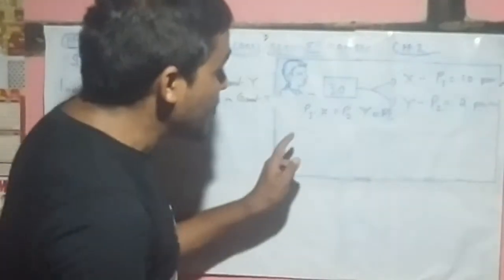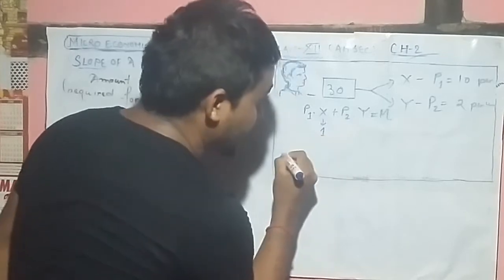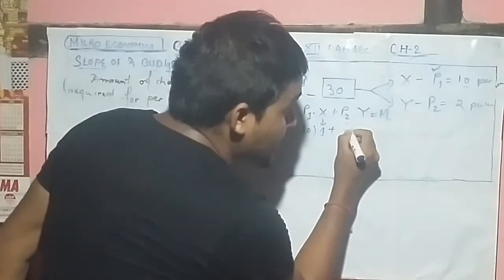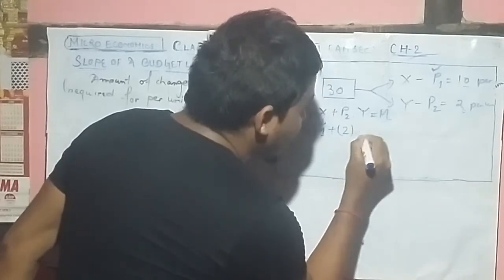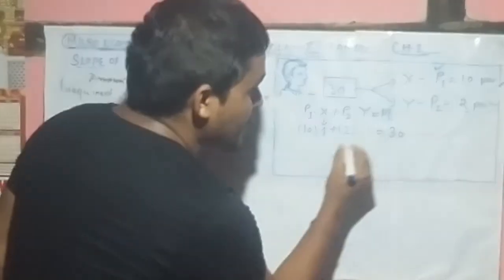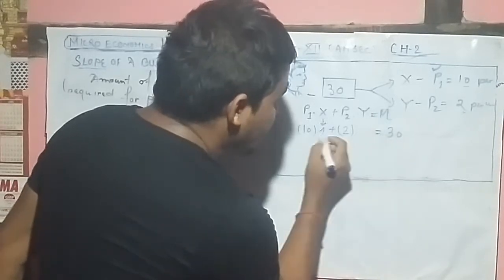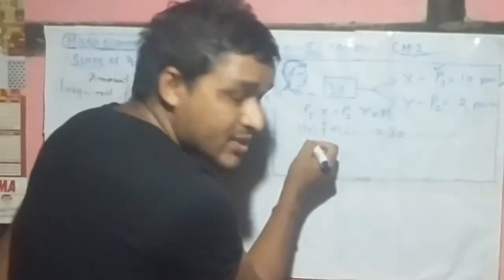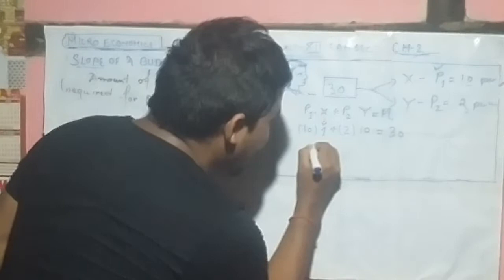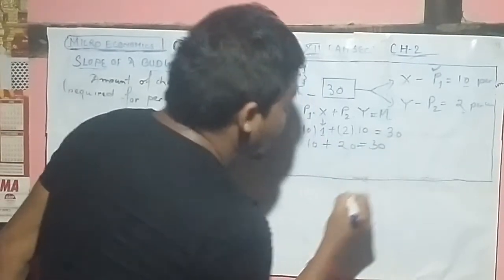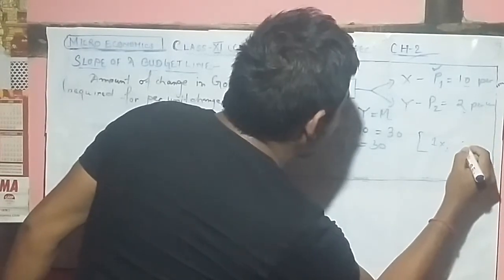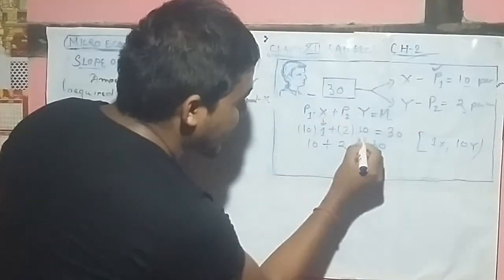Now if we want to purchase one unit of X, that is X equal to 1, and the price of X is 10, then we write: 10 times 1 plus 2 times Y equal to 30. That gives 10 plus 2Y = 30, so 2Y = 20, meaning Y equals 10 units. So the first combination we are getting is 1 unit of X and 10 units of Y.